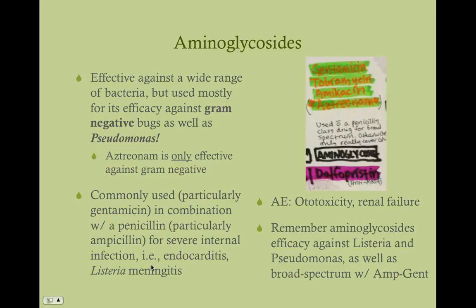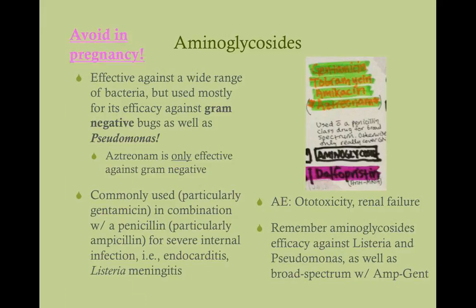Aminoglycosides are effective against Listeria in general. Listeria manifests generally as Listeria meningitis, and you'll see this kind of meningitis in both the very young and the very old. So gentamicin is something you'll want to add to any empiric meningitis therapy in a patient over the age of 60 or under the age of 2. The adverse effects for aminoglycosides are ototoxicity and renal failure. Aminoglycosides are also not to be used in pregnancy because of renal failure and ototoxicity in the developing fetus.